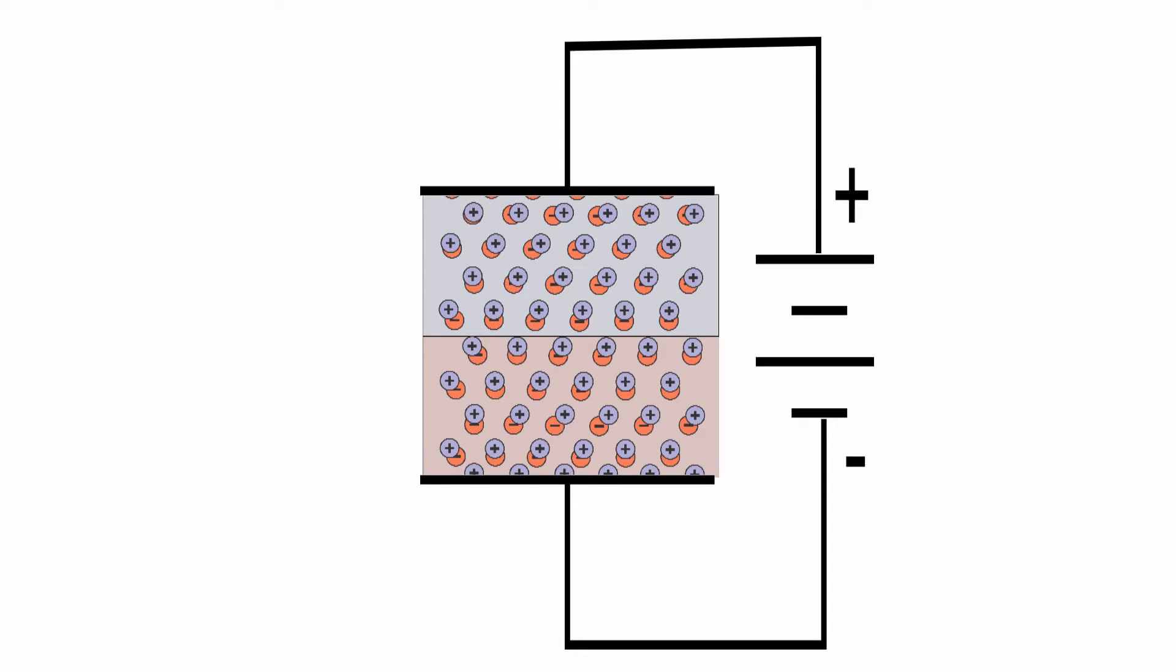The flow of carriers reduces the number near the junction, which in turn reduces the voltage potential across the junction, allowing more carriers to move. Current flows continuously. This is called forward bias.